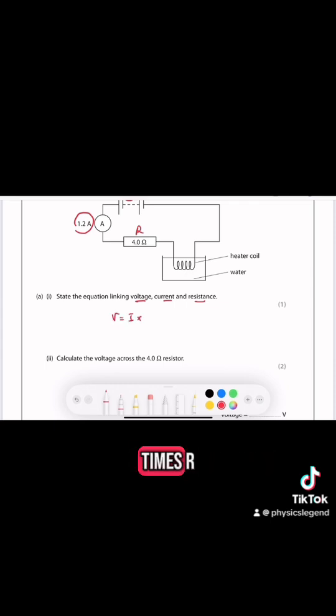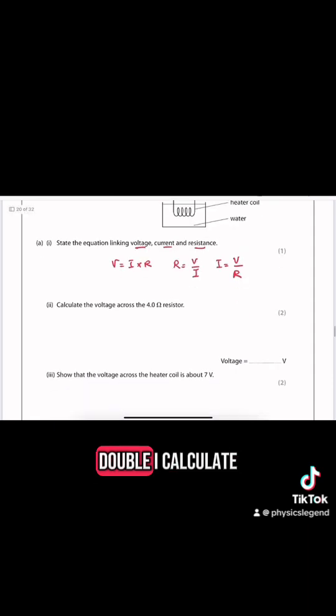V equals I times R, R equals V over I, and I equals voltage over resistance.